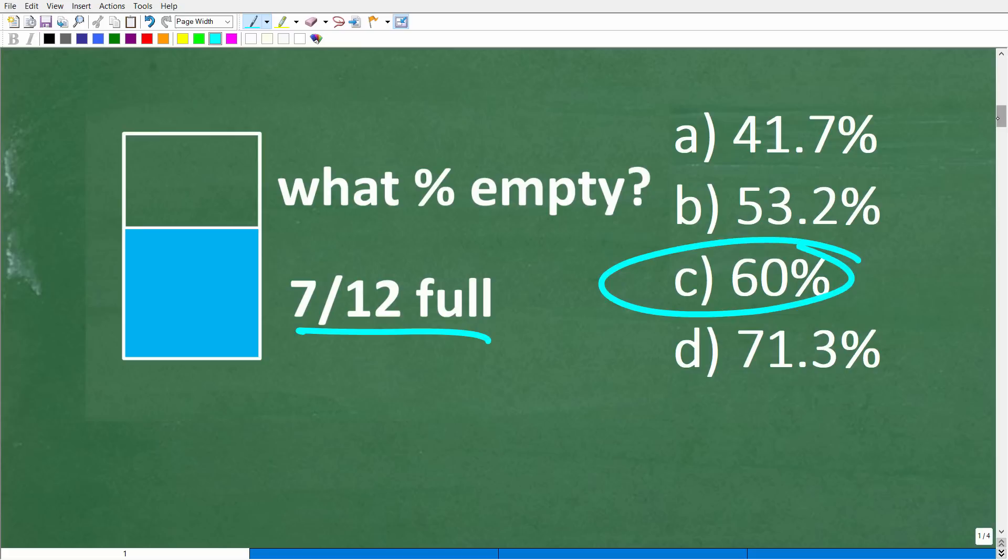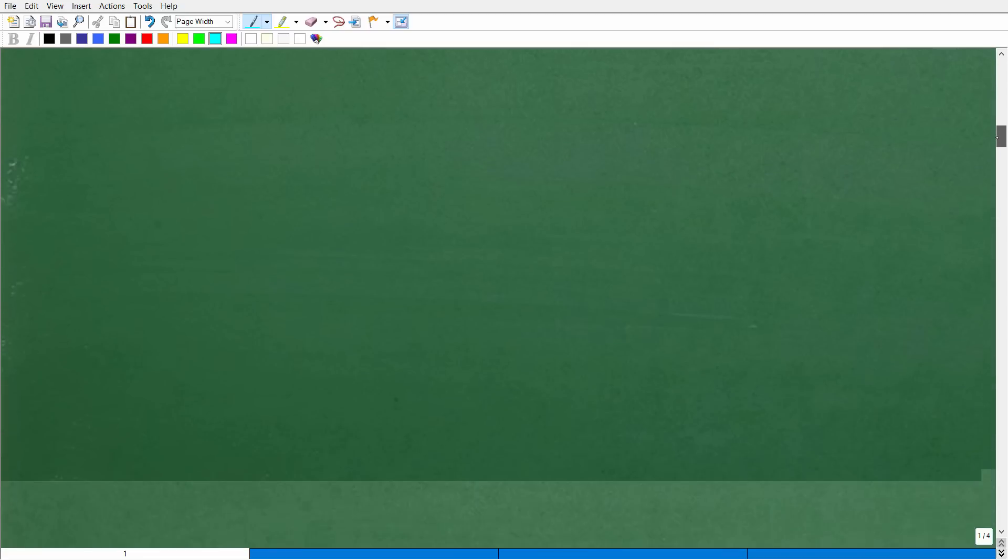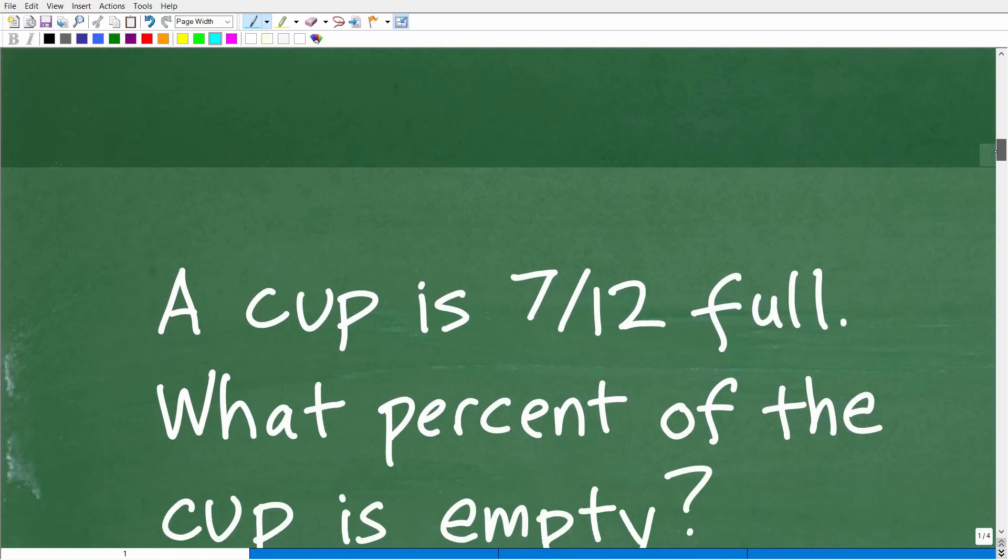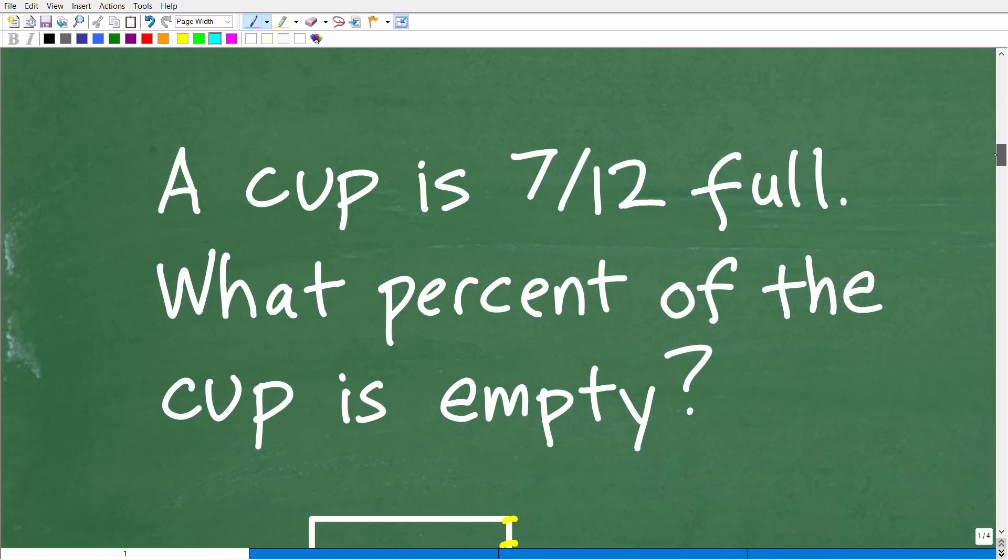All right, so let's go ahead and get into the math here. Now, there's another way we can think of this problem. So let's suppose you were given this problem. This is the same problem, but it's just in word form. So a cup is 7/12 full. What percent of the cup is empty? If you have a word problem, you always want to see the problem. So sketch yourself out a little cup and identify where 7/12 of the cup may be.